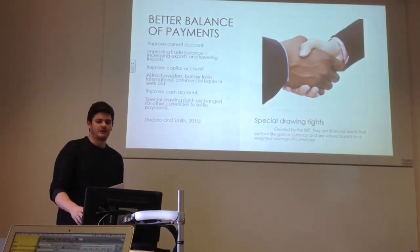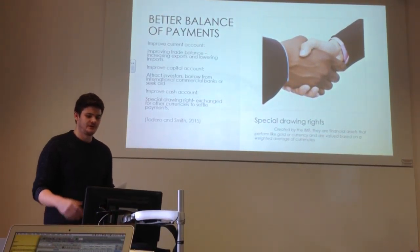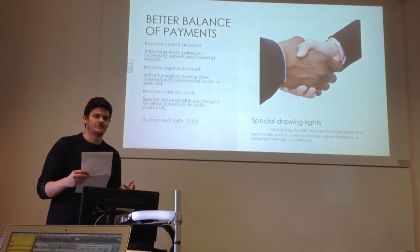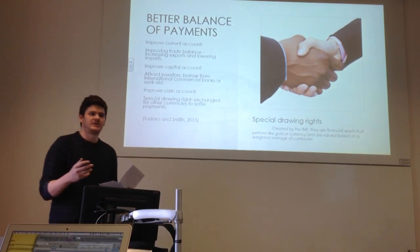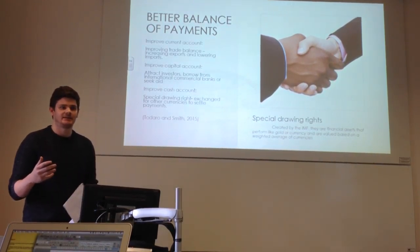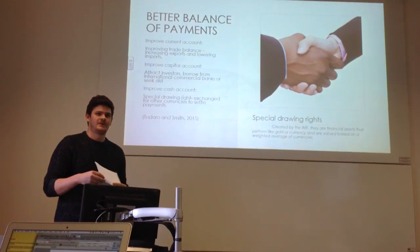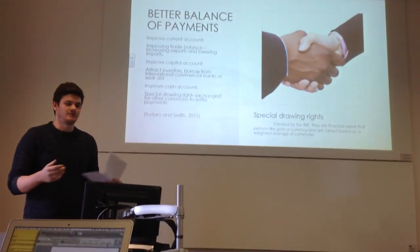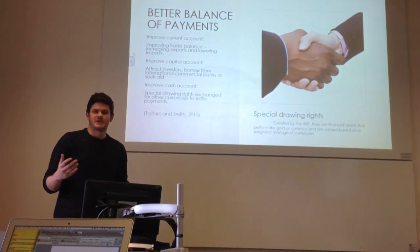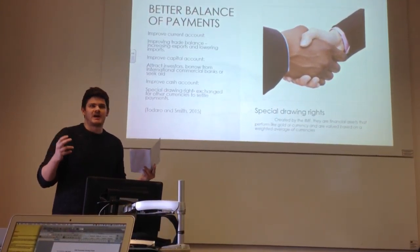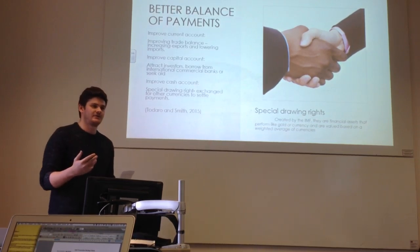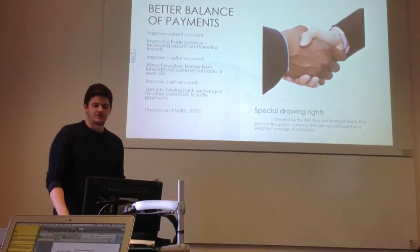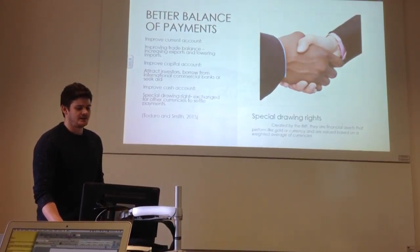Options include improving the current account, the capital account, and the cash account. In 1970, the IMF created something called Special Drawing Rights for developing countries with a depleting cash account. It can't just give countries gold, so the Special Drawing Right — also called 'paper gold' — has a value based on a basket of currencies, which can help their cash account and avoid problems with de-pegging exchange rates.